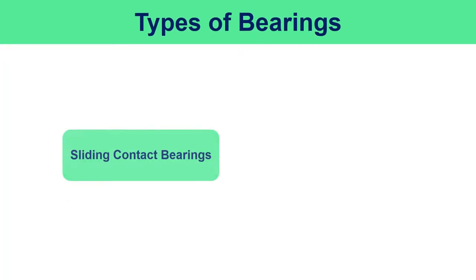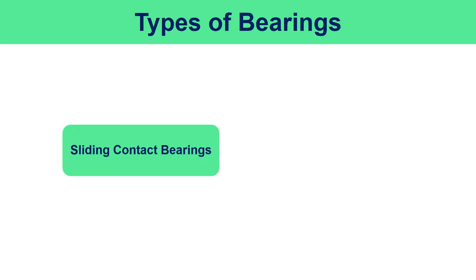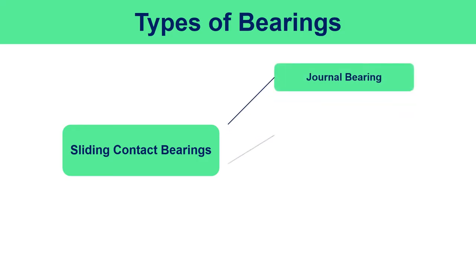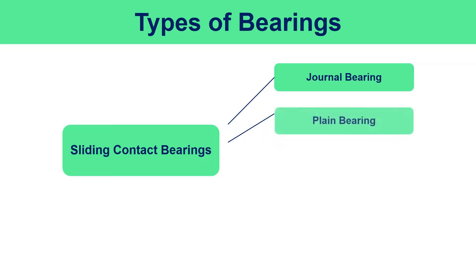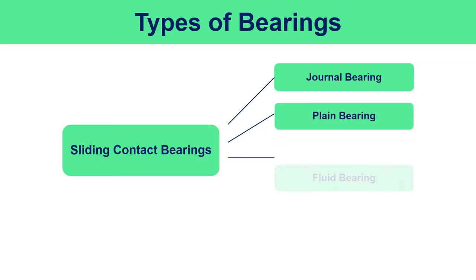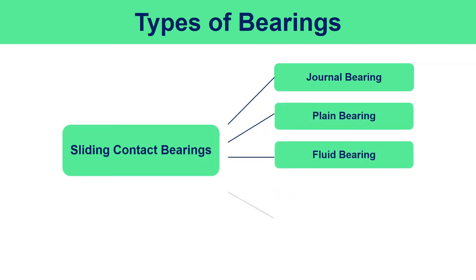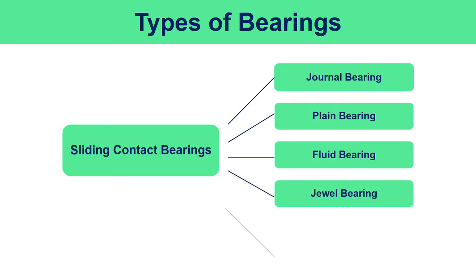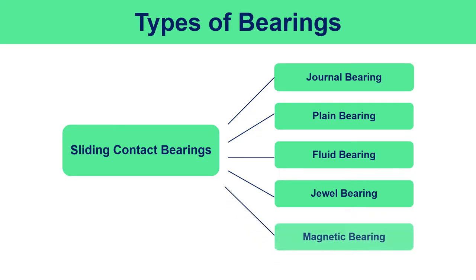Sliding contact bearings include: journal bearings, plain bearings, fluid bearings, jewel bearings, and magnetic bearings.